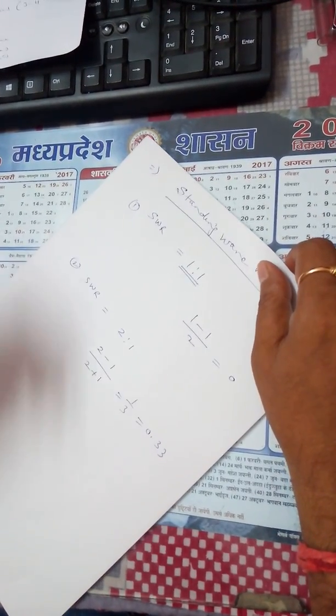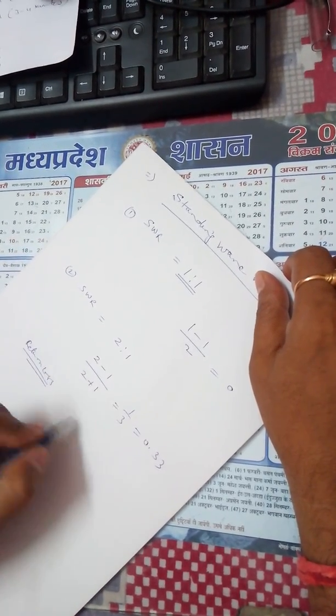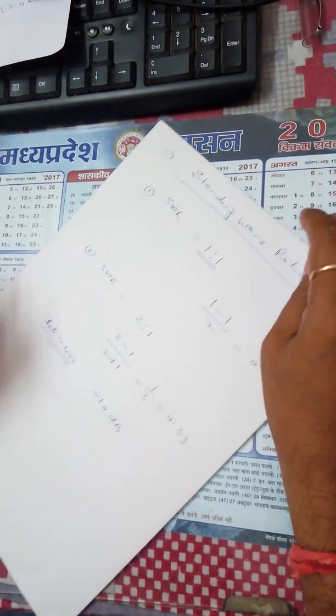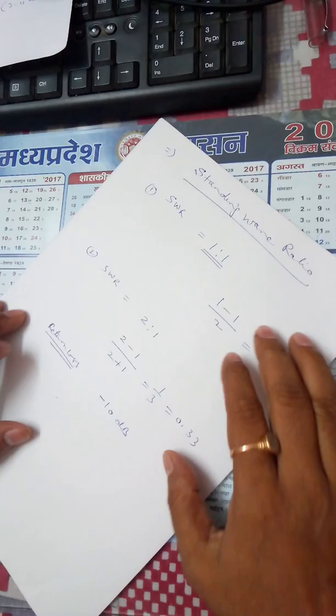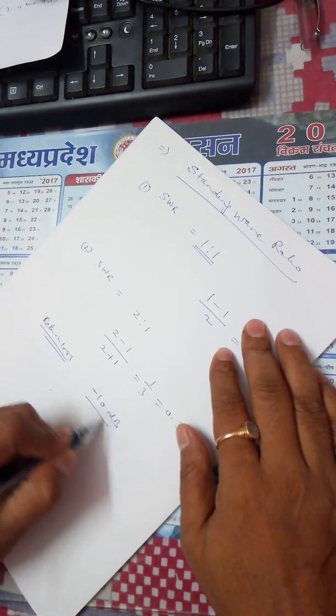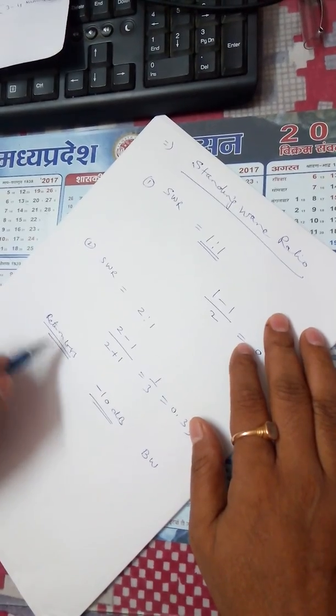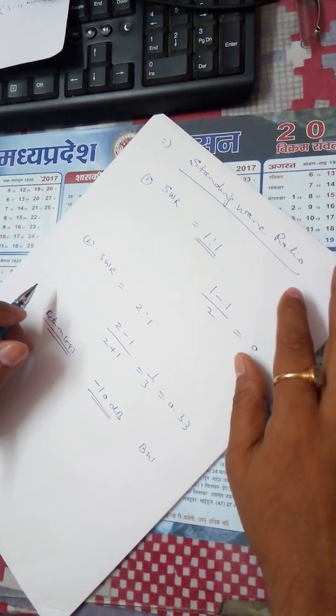Corresponding value of the return loss in such case is minus 10 dB. So this SWR is very much beneficial, applicable for those antennas showing the return loss bandwidth. With respect to this return loss bandwidth with respect to 2 is to 1, we are able to find out what should be the bandwidth of the antenna.